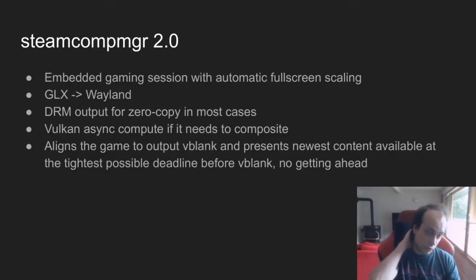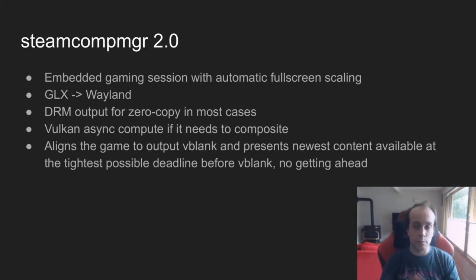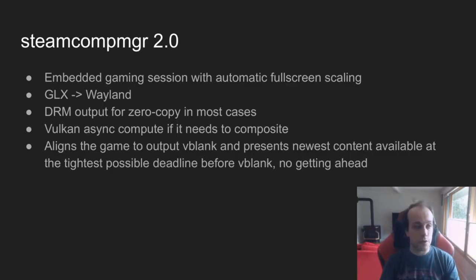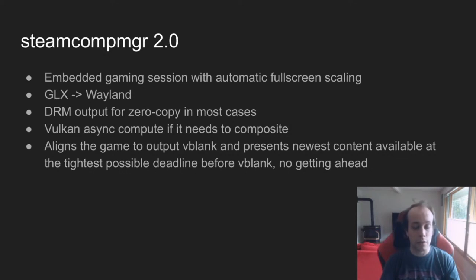By moving over to Wayland and XWayland, we're able to do the same thing — display a single game running in an XWayland instance — but we more directly assume the role of what the DDX was responsible for before. We get to decide what we do with incoming app buffers and either short-circuit graphics to go directly to DRM display output, or composite if needed. The new code uses Vulkan only, so by using Vulkan compute we can schedule work on the async compute ring of the hardware where supported.